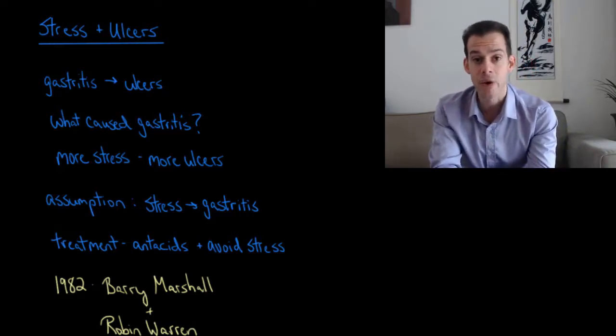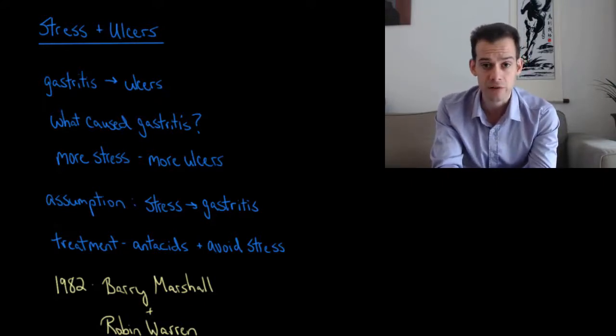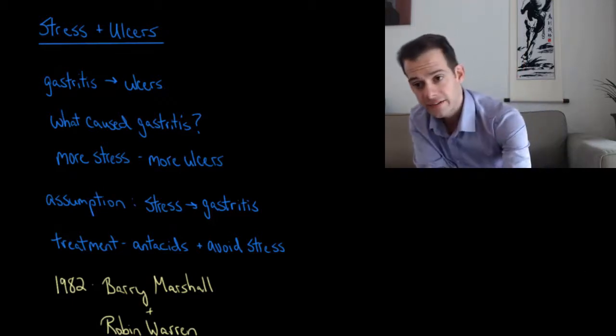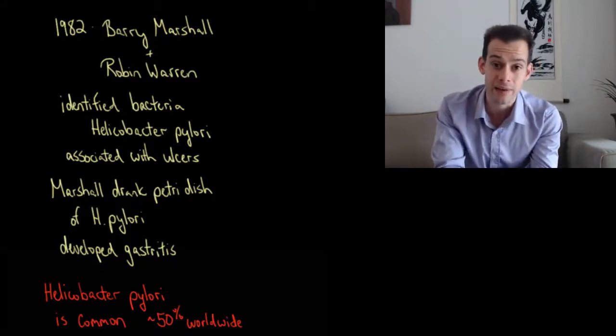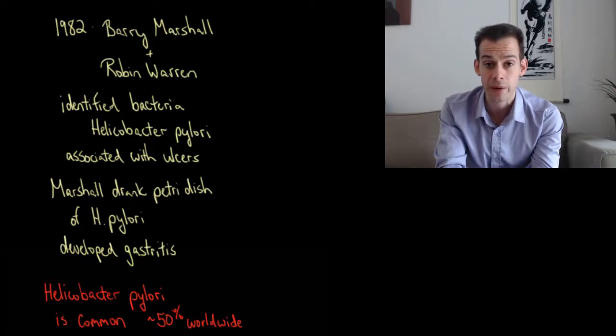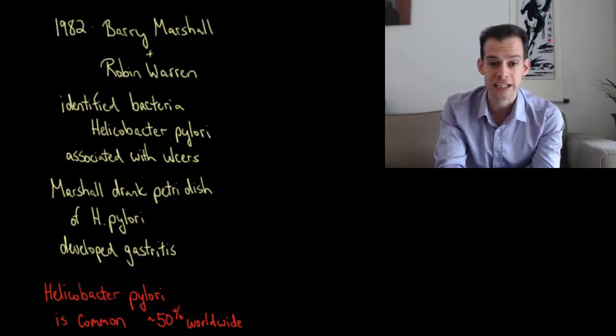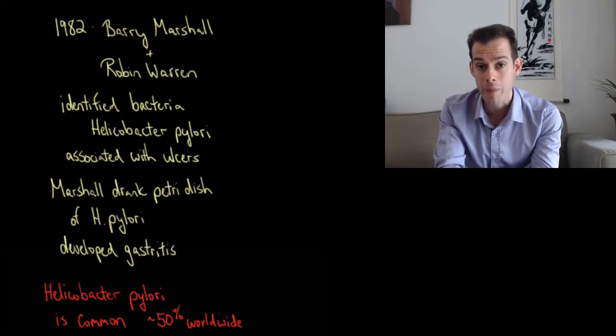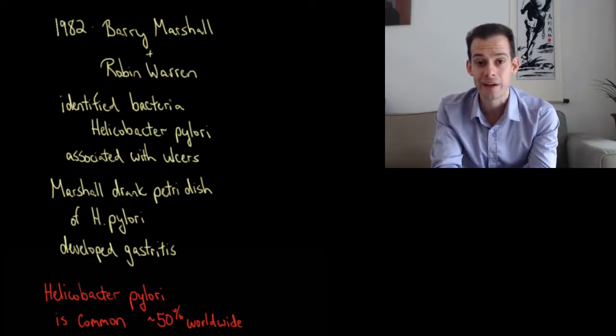and so the treatment for somebody who had peptic ulcers would be that they would be given antacids to try to reduce some of their symptoms and they'd be told to avoid stress this was kind of vague and the doctors didn't really know exactly how this was going to work and it wasn't until 1982 that Australian researchers Barry Marshall and Robin Warren identified that there was actually a bacteria helicobacter pylori that was associated with ulcers and what they found was that this helicobacter pylori caused gastritis and that then led to ulcers as doctors already knew and in order to prove this Barry Marshall actually drank a petri dish filled with pure helicobacter pylori culture and then within a few days he developed gastritis. This provided pretty clear evidence of this relationship.